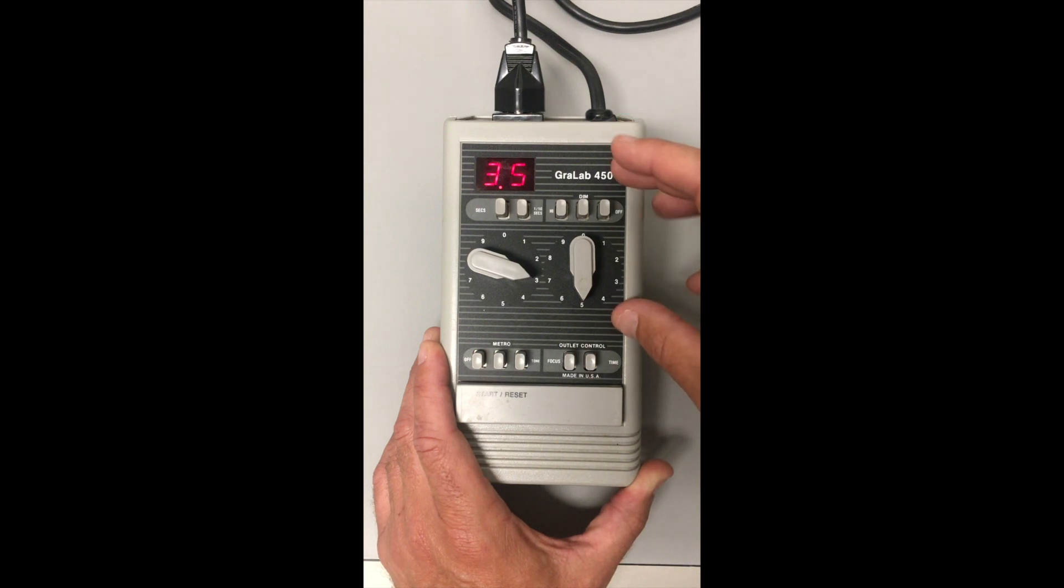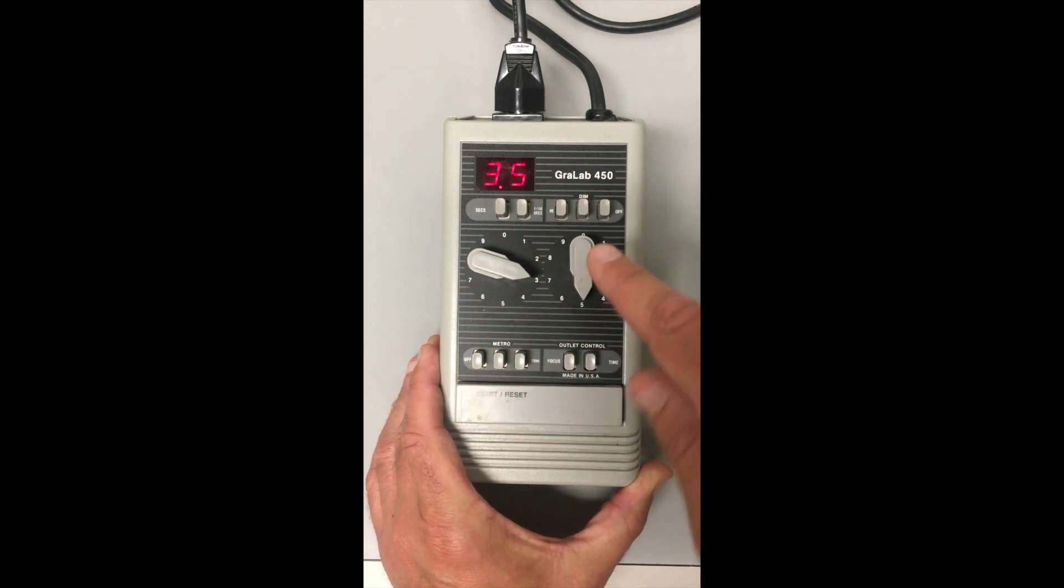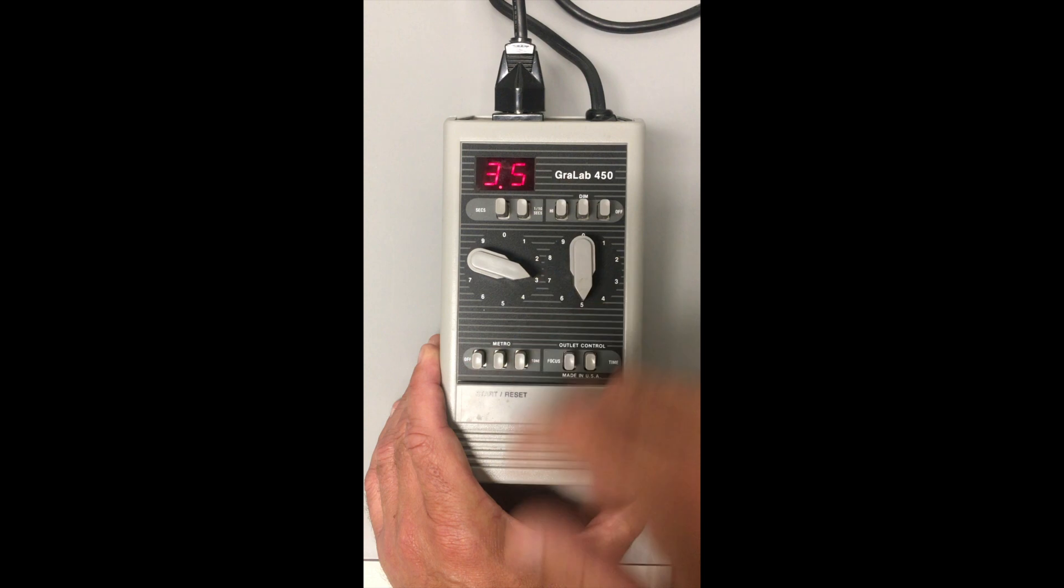When I know the enlarger time I need to expose my image, I'll set the time I need - we'll say it's three and a half seconds. Once it's set, you simply go down here and hit the start button. It turns the enlarger on, the light comes on and exposes for three and a half seconds.